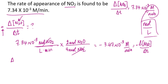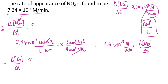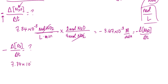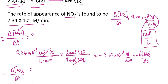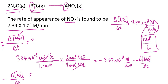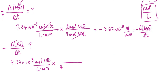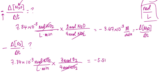I can do it again to find the rate of disappearance of oxygen gas. Starting with 7.34 × 10⁻³ moles of NO₂ per liter per minute, I use the mole ratio: four moles of nitrogen dioxide for every three moles of oxygen. Doing that math gives negative 5.51 × 10⁻³ molar per minute, which is the rate of disappearance of oxygen gas for this reaction.